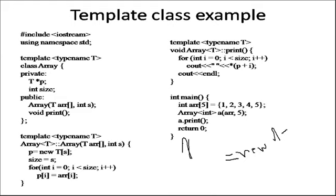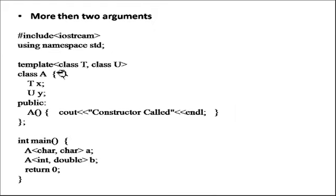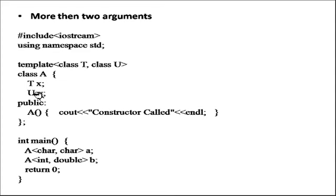This is the example of a template class using a pointer-based array. More than two arguments: we can also use two or three arguments for template classes, such as template <class T, class U>. This is used for different types of data — we can pass different types like char, int, double. You have to remember what types you are passing so that your operations and calculation functions are defined accordingly.